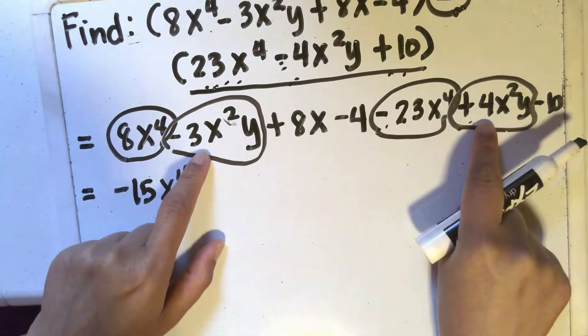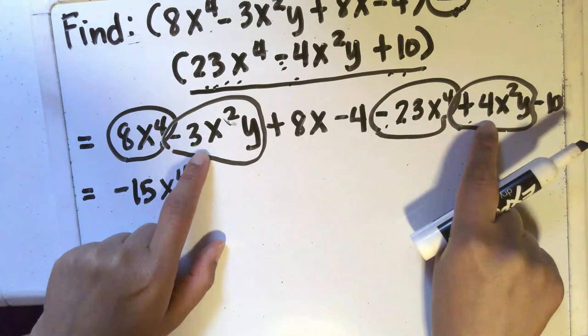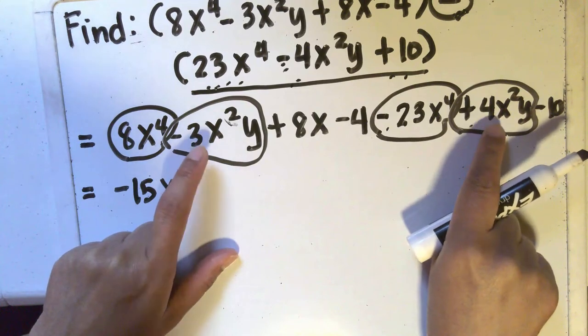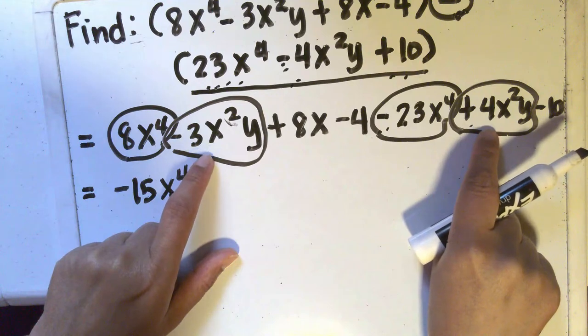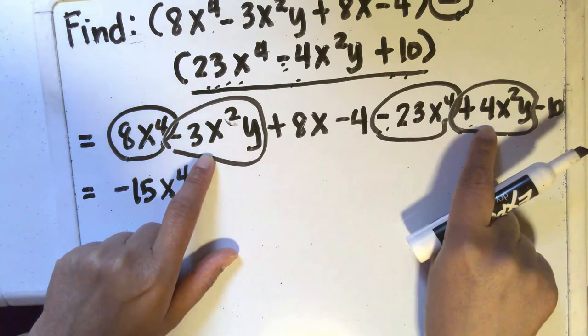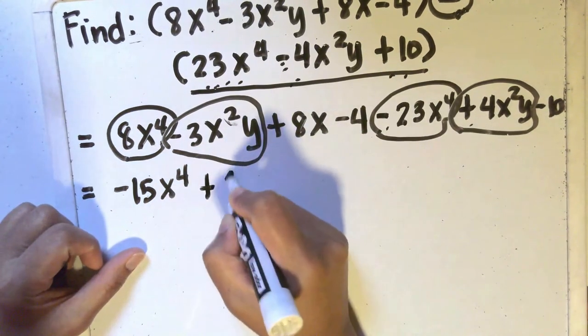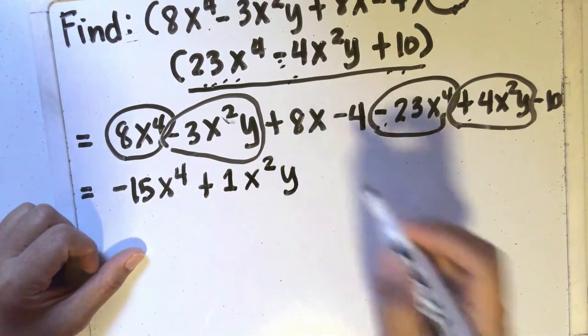The signs are different. So when you're combining different signs, you have to actually subtract their absolute values. So it will be 4 minus 3 is 1 and then we will copy the sign of the one with the higher absolute value. So we will copy the sign of 4. So plus 1 and then we will copy the variable that they have in common.